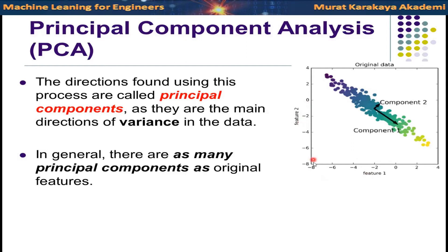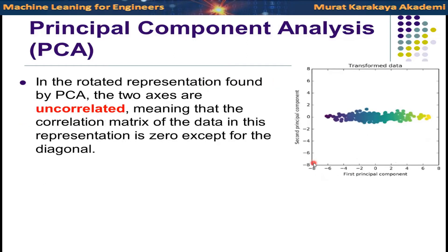In the original data there was a negative correlation between feature one and feature two. But if you look at the rotated dataset, whether the first principal component is increasing or decreasing, the second principal component does not change. The same idea applies to the second principal component as well. So after the rotation, after finding the principal components, these two components are uncorrelated from each other — which is exactly what we want in a feature set, as uncorrelated features give us valuable, non-redundant information.